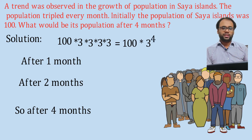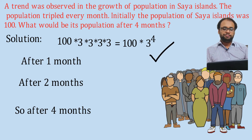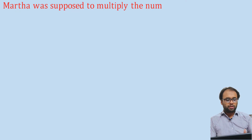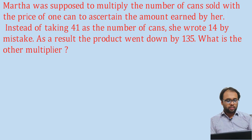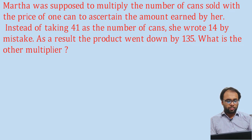It was a very simple question — these are very simple questions and you can score pretty easily. Next question: Madha was supposed to multiply the number of cans sold with the price of one can to ascertain the amount earned by her. Instead of taking 41 as the number of cans, she wrote 14 by mistake. As a result, the product went down by 135. What is the other multiplier?